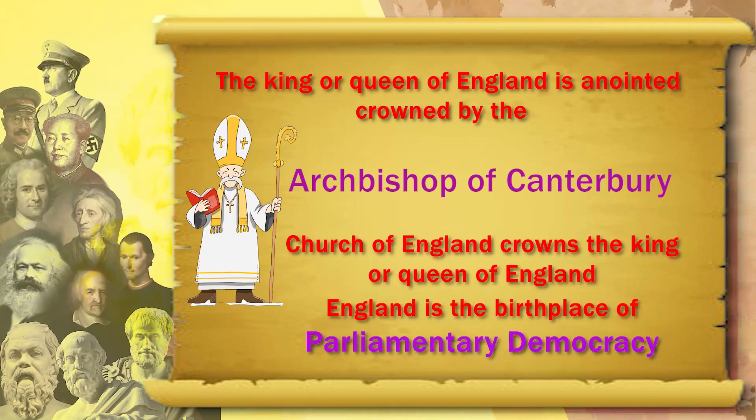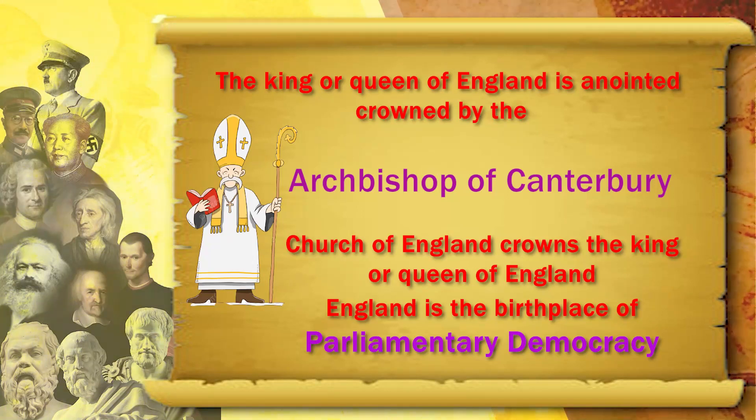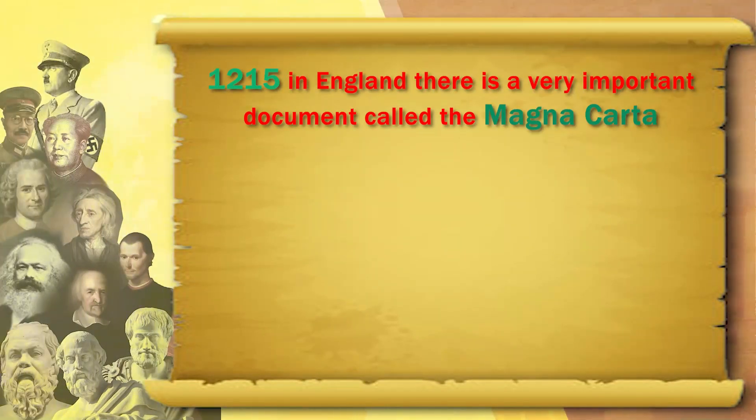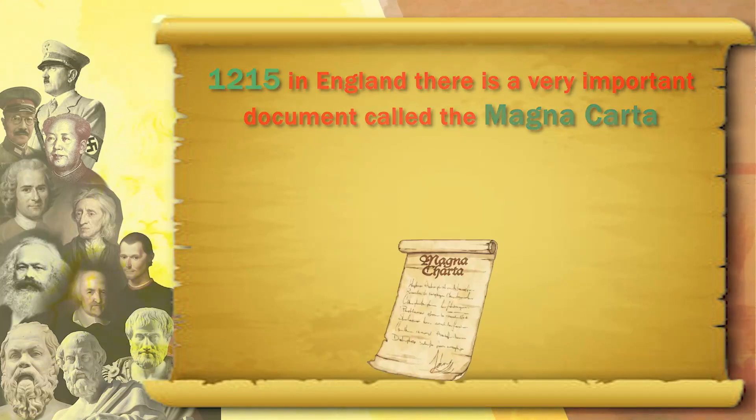England is the birthplace of parliamentary democracy — and yet the Church of England crowns the king or queen. This is another legacy of European political thought: the church has the divine authority which rules this earth, and the king has to rule by divine authority given by the church, given by God, given by Jesus Christ. This is reflected in a very important document: the Magna Carta of 1215.